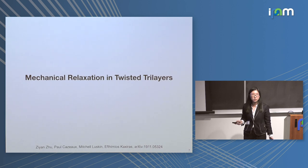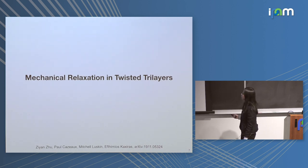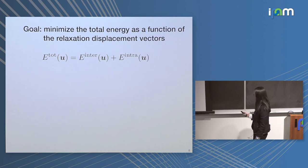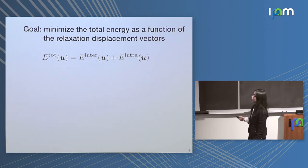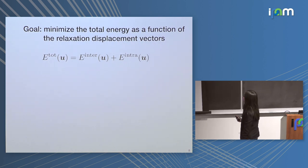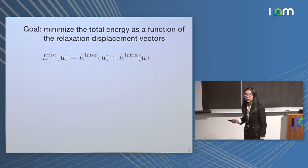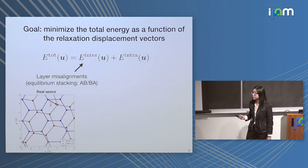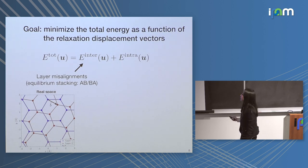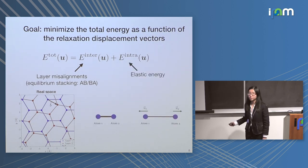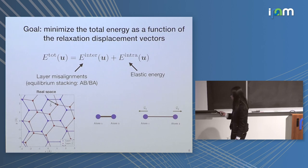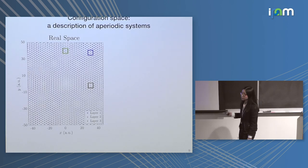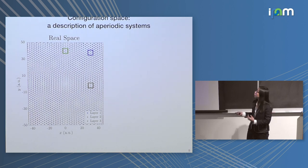To get around the aperiodicity and the large length scale, we developed a few approaches. In the first part I'm going to talk about how we deal with the mechanical relaxation. Our goal, as Paul mentioned on Monday, is to minimize the total energy as a function of displacement vectors. This total energy has two contributions: the first is the interlayer energy, which comes from layer misalignment due to a small twist, and the second is the intralayer energy — the elastic energy due to surface deformation. We parameterized these terms from density functional theory calculations.